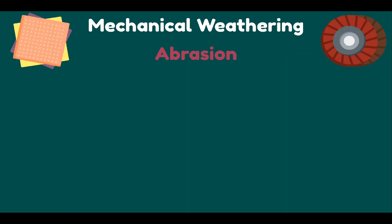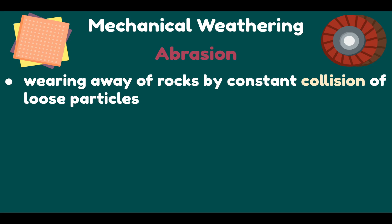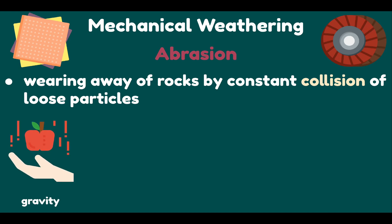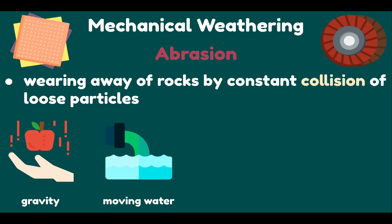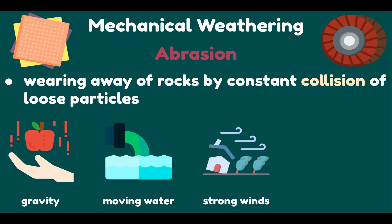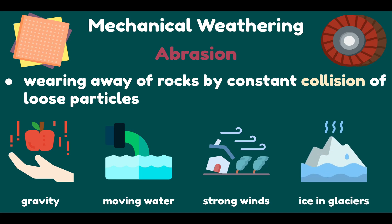Next, we have abrasion — the wearing away of rocks by constant collision of loose particles. One rock bumps against another, caused by many things. Gravity causes abrasion as a rock tumbles down a mountainside or cliff. Moving water causes abrasion as particles collide and bump against one another. Strong winds carrying pieces of sand can sandblast surfaces. Ice and glaciers also carry bits and pieces of rocks, and rocks embedded at the bottom of a glacier scrape against the rocks below. Abrasion makes rocks with sharp or jagged edges smooth and round.